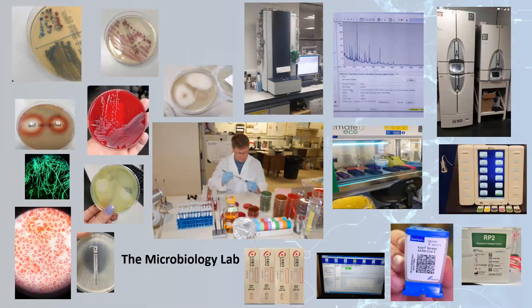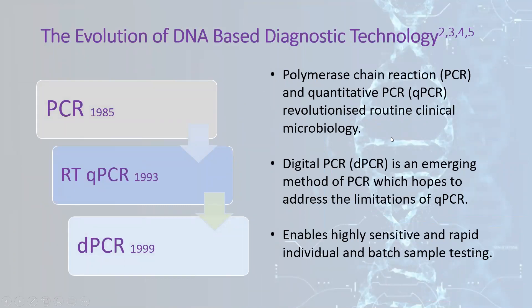There has been an evolution of technology from basic culture and microscopy through advanced culture, molecular detection, and DNA-based detection through PCR. We have examples of culture, microscopy, matrix-assisted laser desorption ionization time-of-flight mass spectrometry, fluorescent-label carbon detection in bioculture monitoring, and nested multiplex PCRs in cartridge form. The evolution of DNA-based technology began in 1985 with Kary Mullis' discovery of PCR, through quantitative PCR, and now digital PCR.